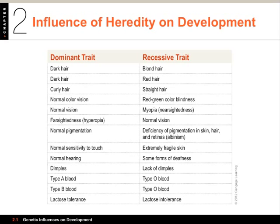Now let's look at dominant and recessive traits. Traits are determined by pairs of genes - sometimes a single pair, sometimes many pairs. Each member of a pair of genes is termed an allele, spelled A-L-L-E-L-E. When both alleles for a trait, such as hair color, are the same, a person is homozygous for that trait. When the alleles are different, the person is heterozygous. Some traits result from an averaging of genetic instructions; when the effects of both alleles are shown, they're said to be incomplete dominance or codominance.